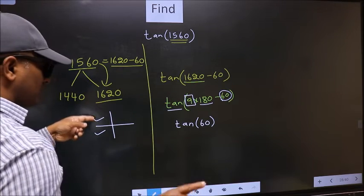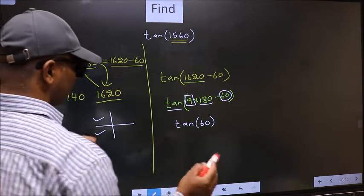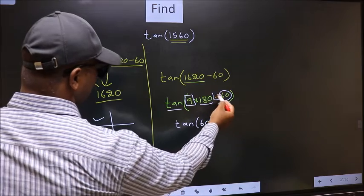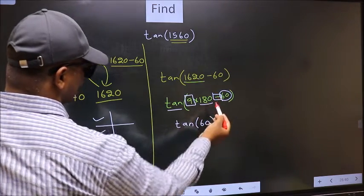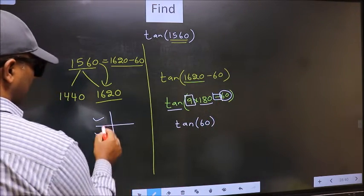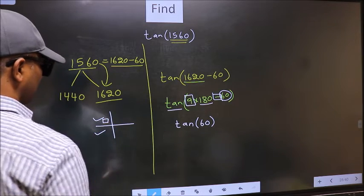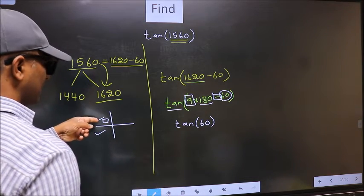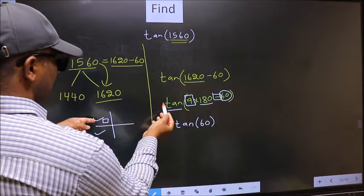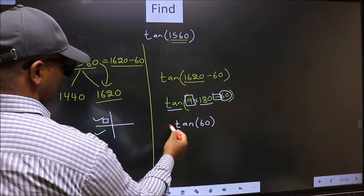So now to select the quadrant, we should look at this symbol. Here we have negative. That means angle lies in the second quadrant. And in the second quadrant, tan is negative. So we should put negative.